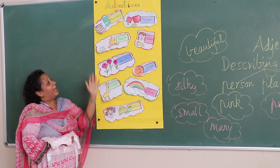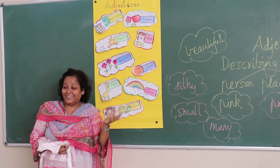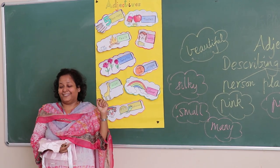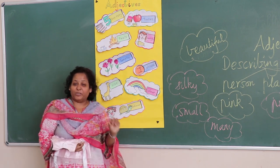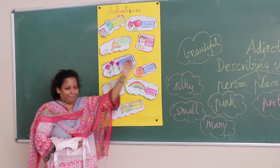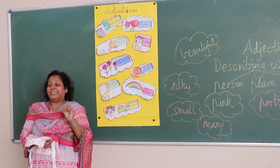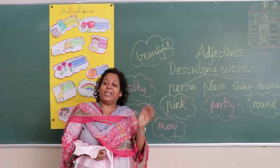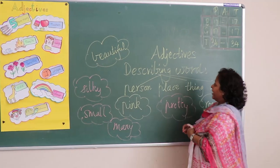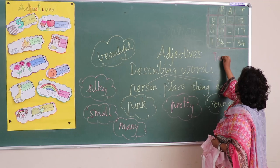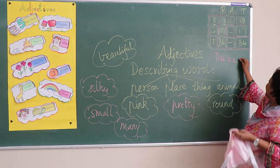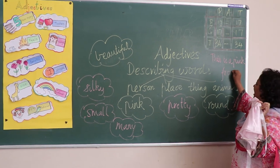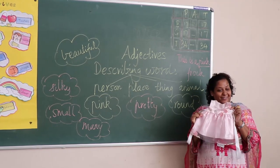How it tastes — yummy, tasty, sour, bitter, sweet. So the adjective tells more about a noun or a pronoun, and it gives more information about these things. Now an adjective generally comes before a noun. For example, this is a pink frog — frog is a noun, and the adjective comes before it.